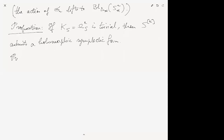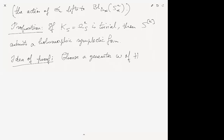Sketch of proof: We choose a generator ω of H⁰(S, K_S). This is holomorphic symplectic because K_S is trivial, so this form doesn't vanish anywhere. Then we pull it back via the various projections π_i: S^r → S to the Cartesian power, obtaining C = Σ_i (π_i)* ω.